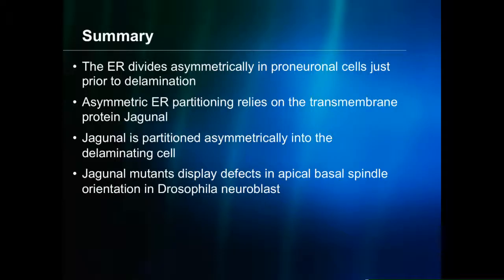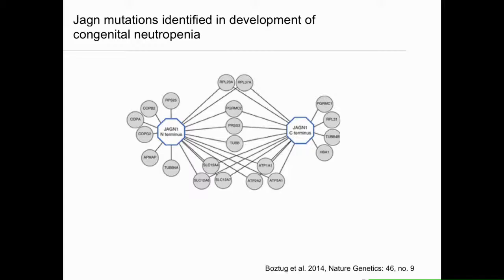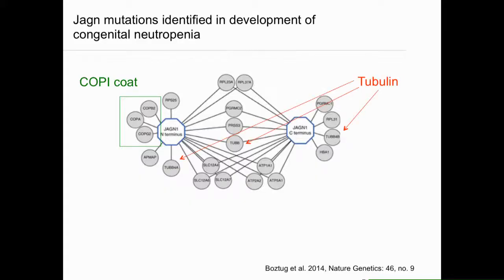To summarize: the ER divides asymmetrically in pro-neuronal cells, this relies on the transmembrane protein Jaganol, Jaganol mutants display defects in apical-basal spindle orientation in Drosophila neuroblasts, and Jaganol itself partitions asymmetrically. One exciting connection with this meeting's theme of model organisms and disease: a paper came out linking human Jaganol with congenital neutropenia — a problem in white blood cell development, leaving patients more prone to infection. TAP-tagging of Jaganol showed the N-terminus binds the COP1 coat, and several instances where Jaganol binds to tubulin itself.